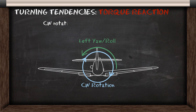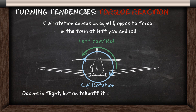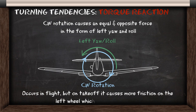For torque reaction, clockwise rotation causes an equal and opposite force in the form of left yaw and roll. This occurs in flight but also on takeoff, because it causes more friction on the left wheel which pulls the plane to the left.